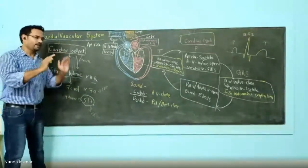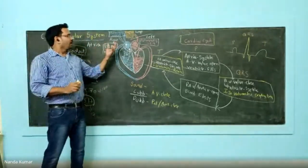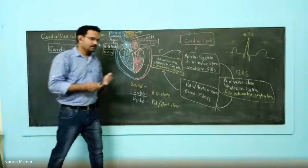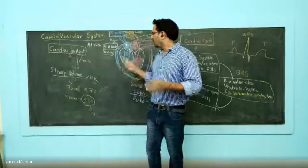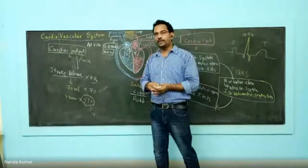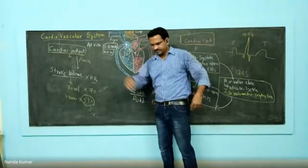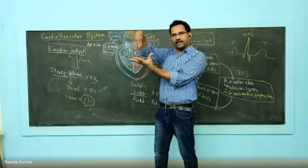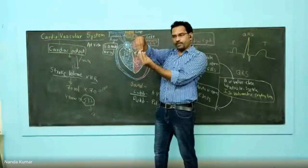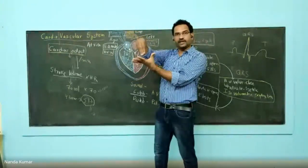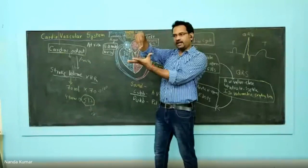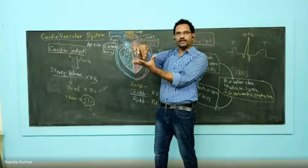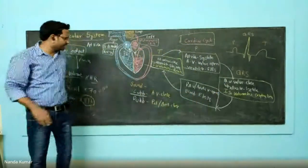The ventricular function has more prominence than atrial function, because even though there is a problem in the atria, the ventricle will manage. When atria contracts, blood comes to the ventricle. When the ventricle dilates, it causes a negative pressure, and because of this negative pressure blood comes down into the ventricle. Even if the atria is not working properly, the ventricle's negative pressure during dilation draws blood down, since blood moves from high pressure to low pressure.